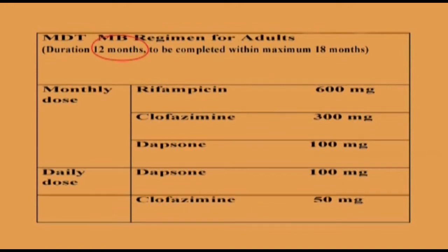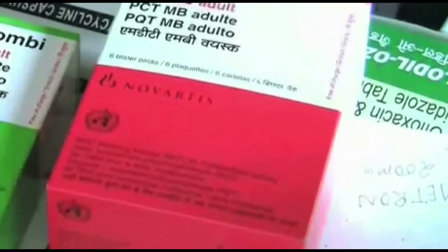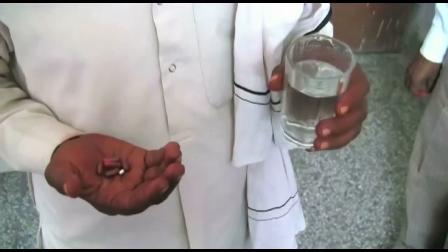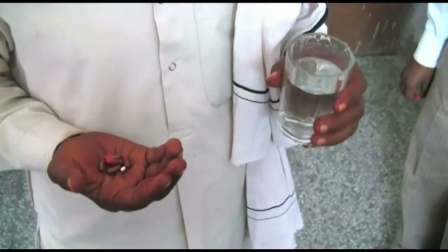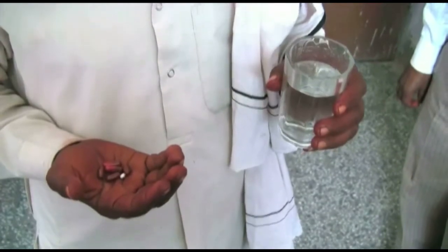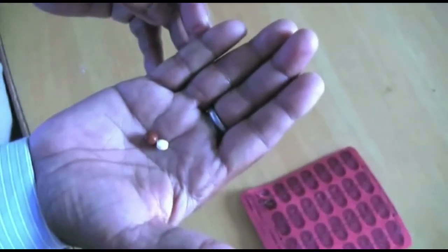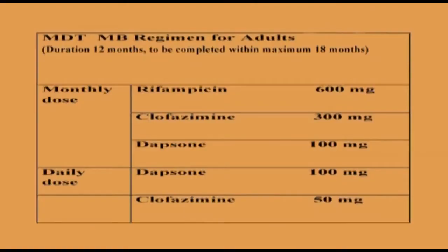For MB leprosy, treatment is given for 12 months. Here are the 12 blister calendar packs. The monthly dose is taken at the start of each pack on day 1. The daily dosages are taken for 28 days for 12 months. To be effective, the MB course must be completed within 18 months or less.